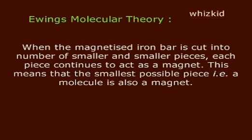When the magnetized iron bar is cut into a number of smaller and smaller pieces, each piece continues to act as a magnet. This means that the smallest possible piece — that is, a molecule — is also a magnet.